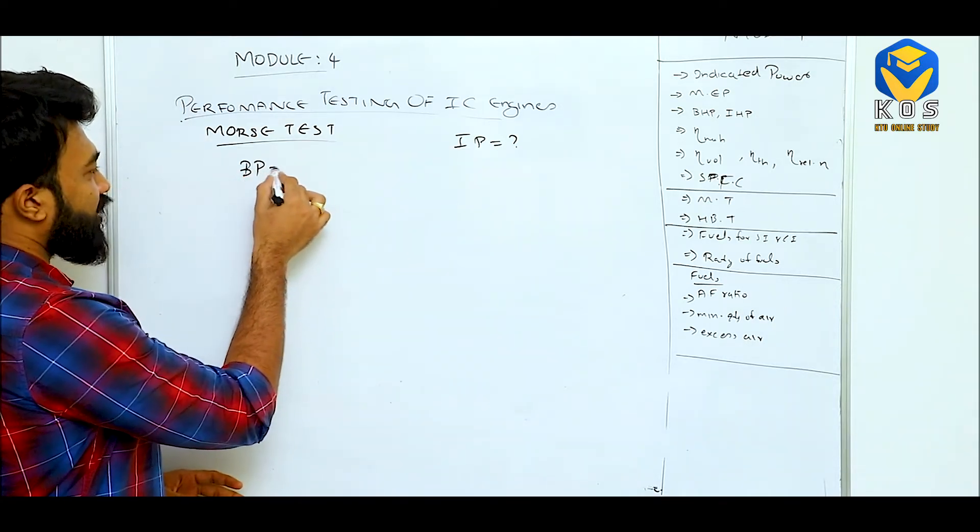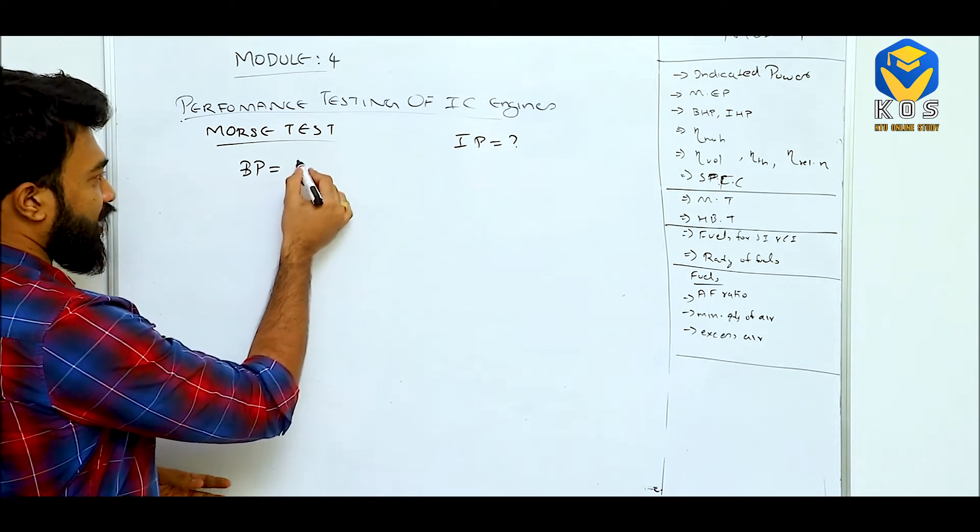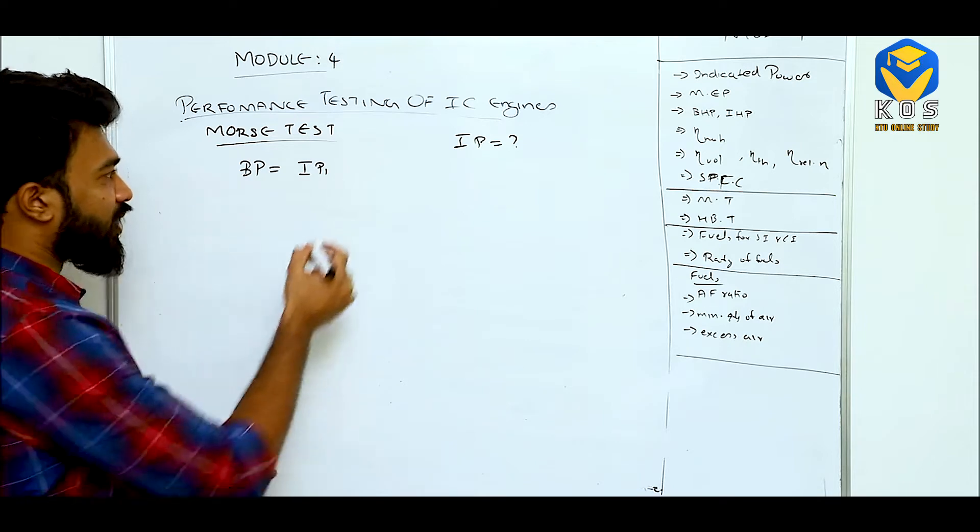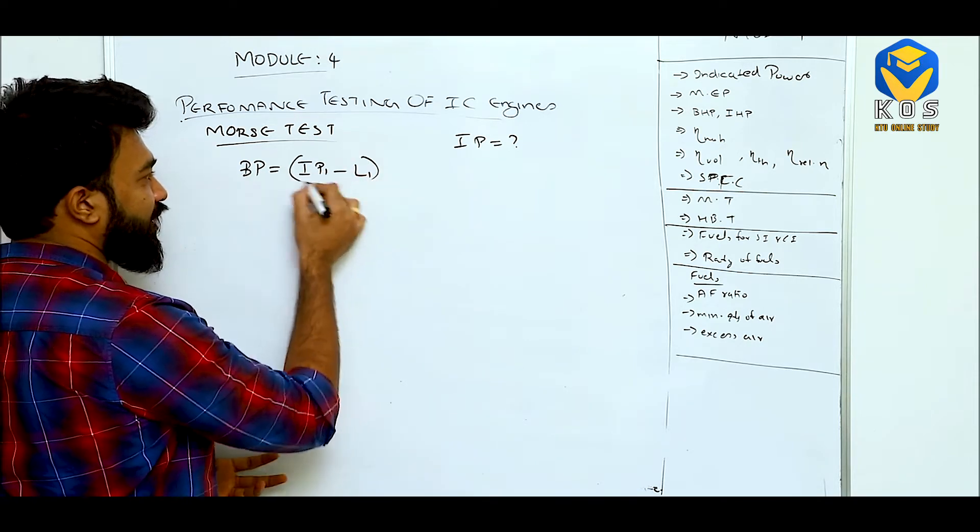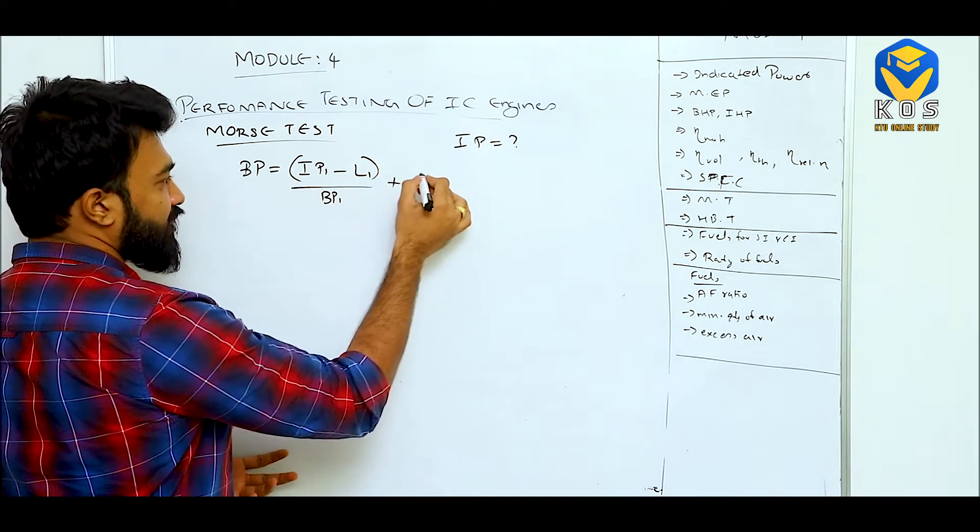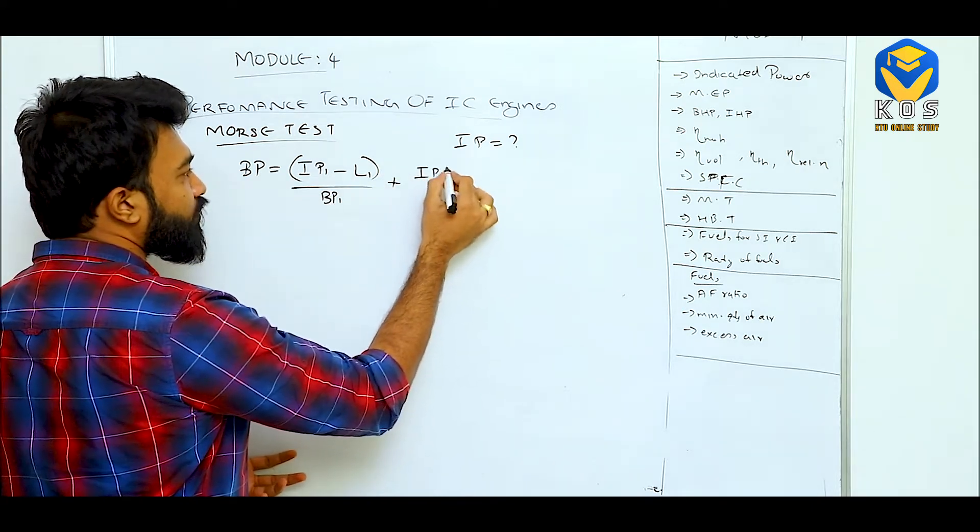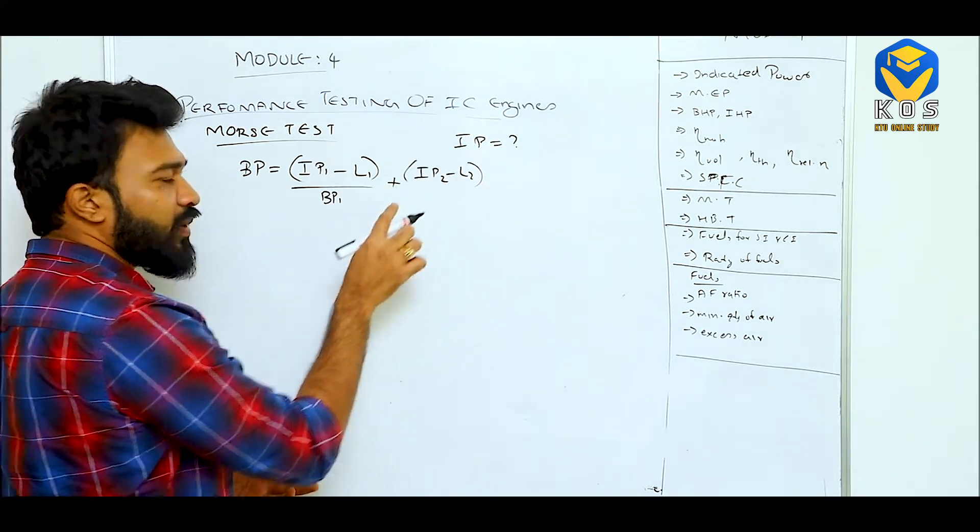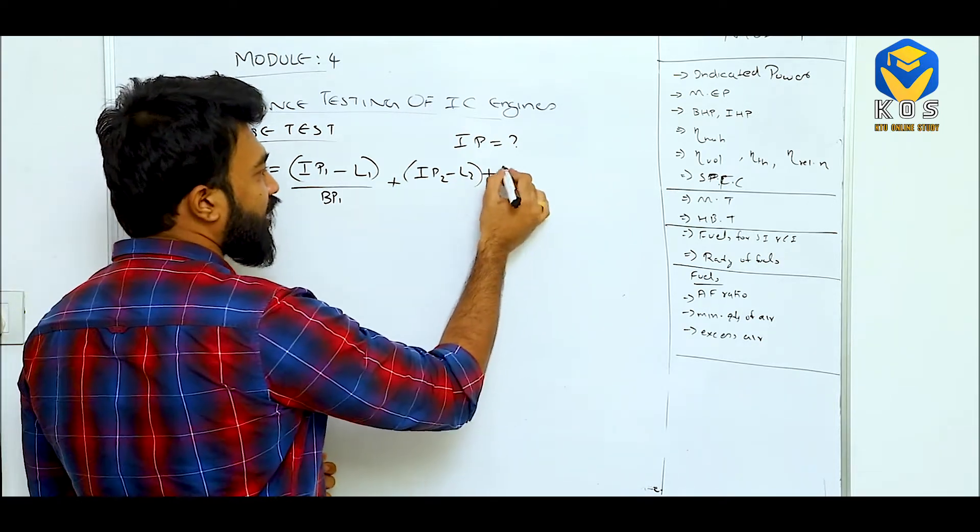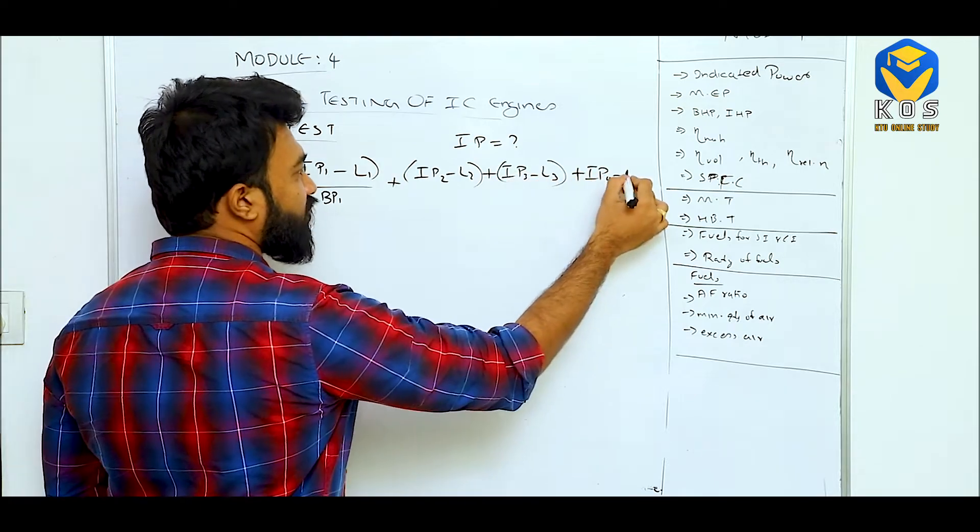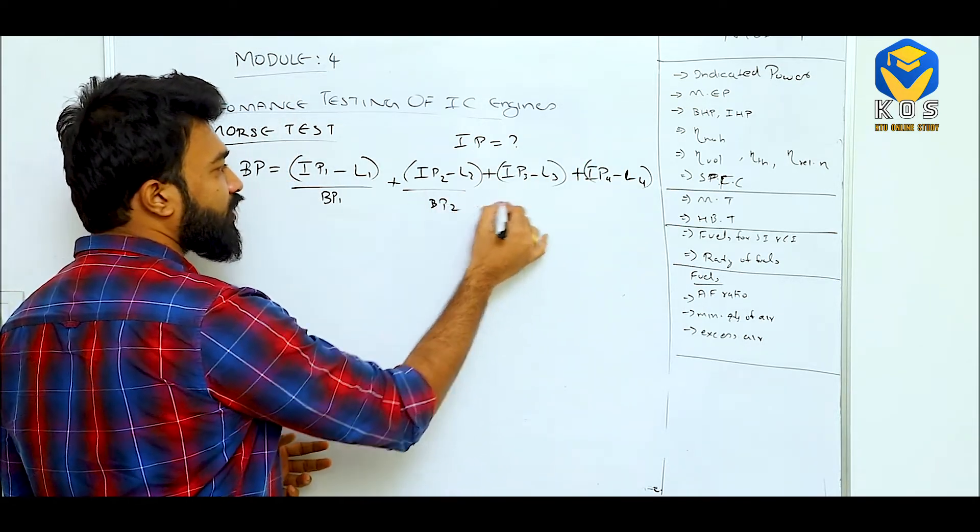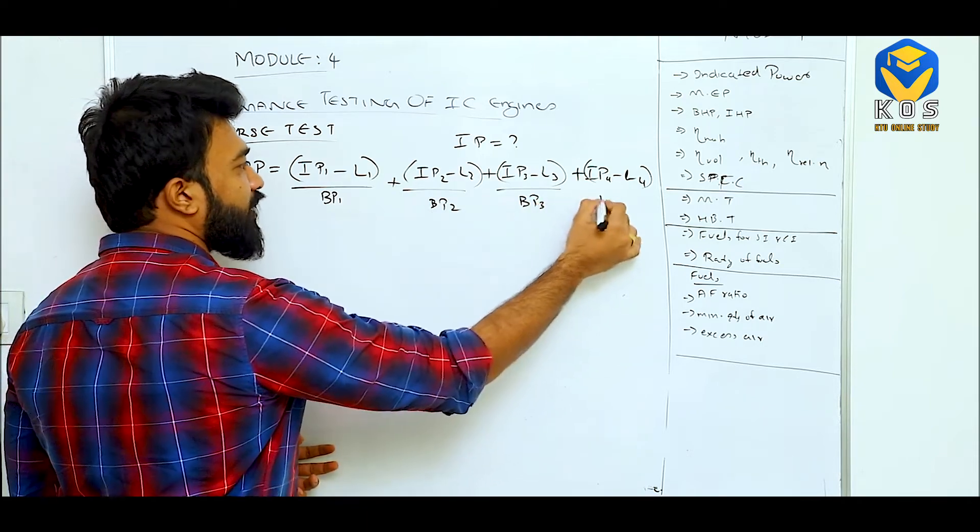Effective brake power, what's happening? That means we have a 4 cylinder engine. That means indicated power is produced by the first cylinder, minus losses in the first cylinder. This means BP1. Plus IP2 minus L2. IP means a second cylinder produced indicated power. Now we have BP1, BP2, BP3 and BP4.